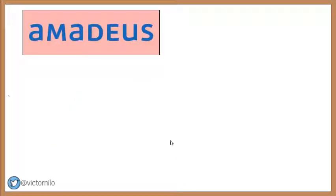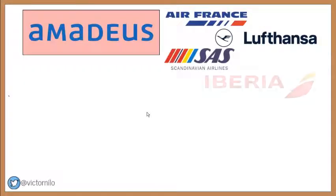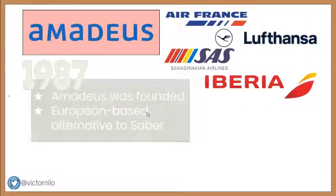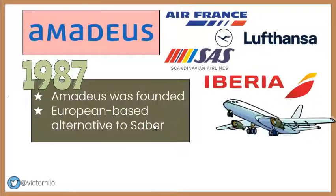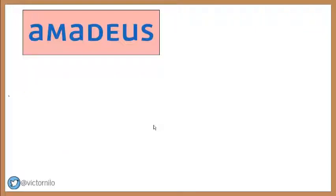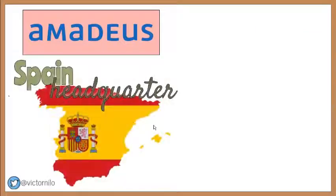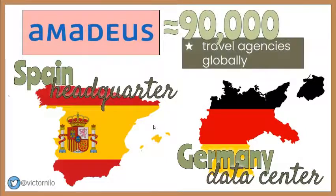The Amadeus GDS was originally created by Air France, Lufthansa, Iberia, and Scandinavian Airlines as a European-based alternative to Sabre. It was founded in 1987, and while it initially focused on connecting end-users with airline inventories, it has since grown to offer access to other travel services, including hotel rooms and car rental services. Its headquarters are in Spain, while its central database is in Germany. It is estimated that Amadeus is used by 90,000 travel agencies globally.